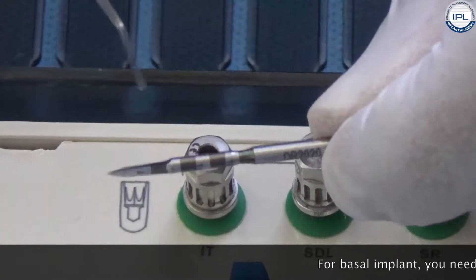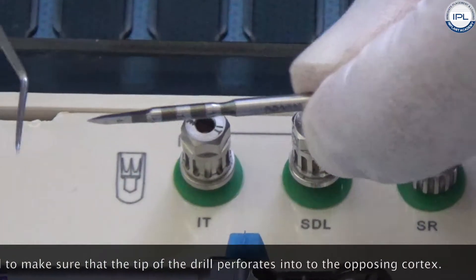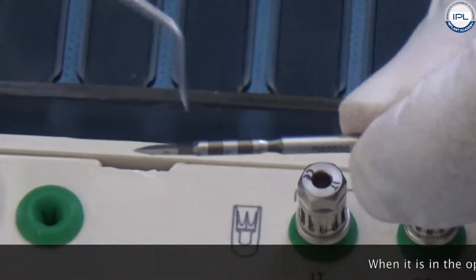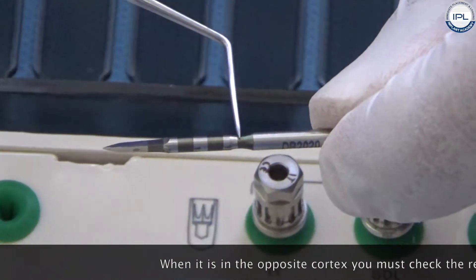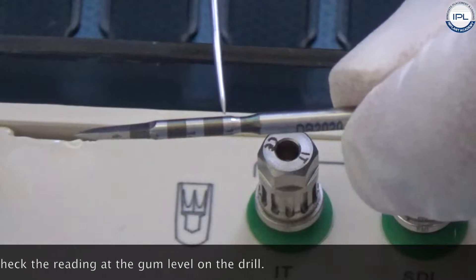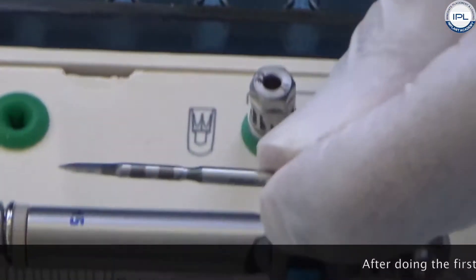For basal implants you need to make sure that the tip of this drill perforates into the opposing cortex. When it is in the opposing cortex you must check the reading at the gum level on the drill. If it is 18 or 20 or 14, that will be the length of your basal implant. So this is your first drill.